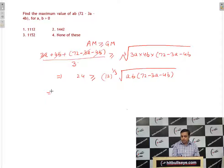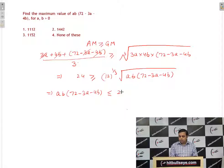the resultant expression will be AB into 72 minus 3A minus 4B less than or equal to 24 cubed divided by 12. And this is equal to 1152.